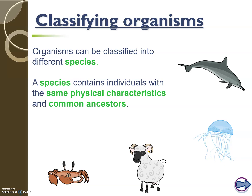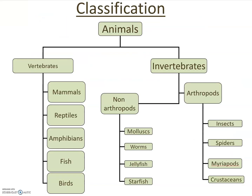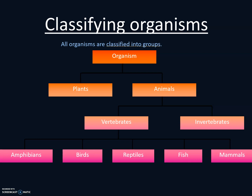Going further into dividing these, the animal kingdom can be split into vertebrates, which have a backbone, and invertebrates, which do not have a backbone. All vertebrates can be mammals, reptiles, amphibians, fish, and birds. Invertebrates are split into arthropods or non-arthropods, which then get split into further species.